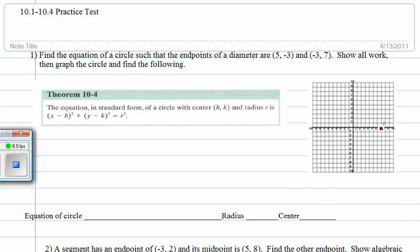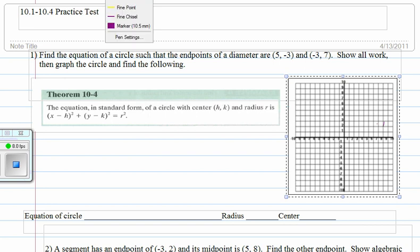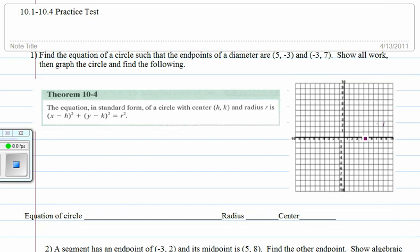So let's plot the points. That's the first thing you should do whenever possible. So the points are 5, negative 3, and negative 3, 7.